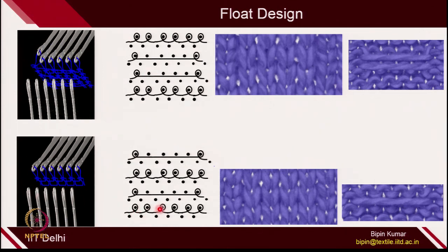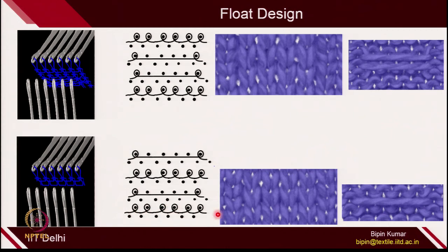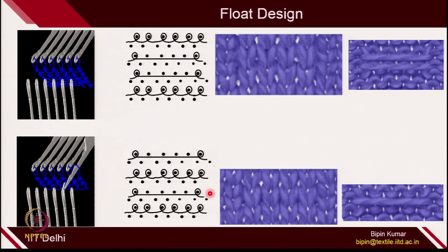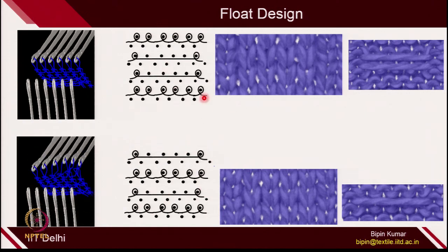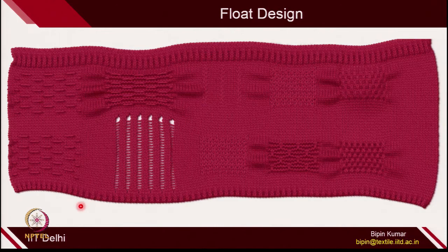Now let's move to this next float design, where the same pattern alternates on each course. Here: first course loops, second course float, third course loop, fourth course float. Because of that the fabric looks like this. On the back side, you can easily see that one course is making float. Compared to the previous design where 2 courses were making float simultaneously, here only 1 course makes float. On the machine: first course all are knitting, second course only 2 are knitting and 4 are resting, third course all are knitting, fourth course again 2 are knitting and 4 are resting. These are simple float designs.